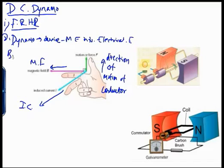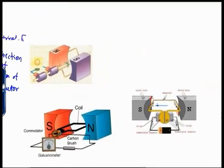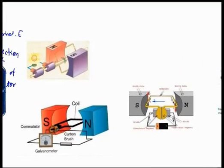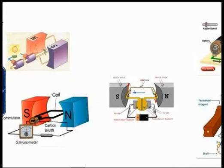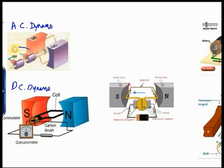We shall quickly go to the construction of a DC dynamo. Before that, let us understand that there exists a small difference between an AC dynamo and DC dynamo. The key difference is: in case of AC dynamo, there are two copper rings R1 and R2 which are connected to the brushes B1 and B2.